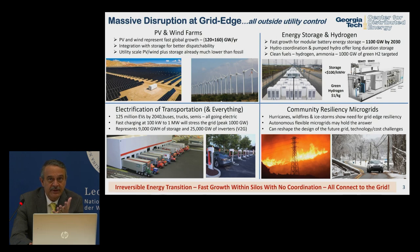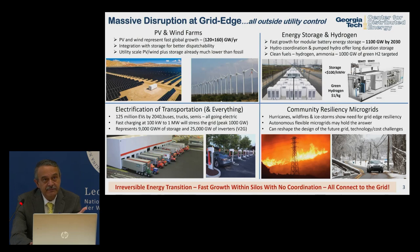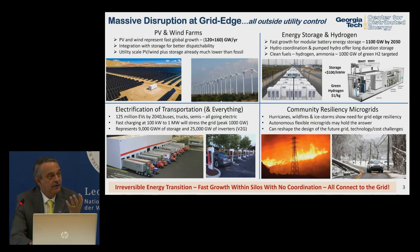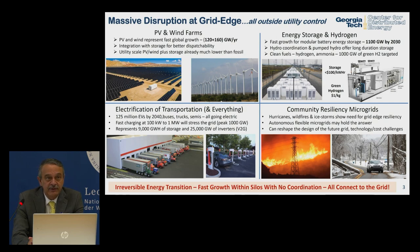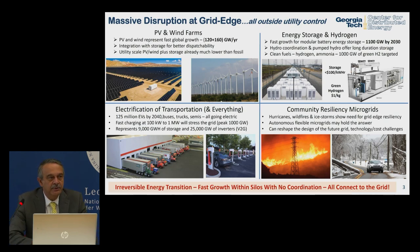Electrification of transportation and eventually everything else is also thousands of gigawatts. If you look at fast charging with 125 million EVs — the midpoint U.S. estimate — eight percent of them charging at a time is a thousand gigawatts of peak load, which equals the total U.S. generation capacity. In addition, we have microgrids and resiliency — all connecting to the grid but completely outside of utility control.